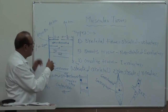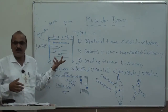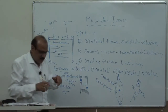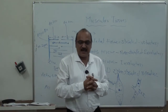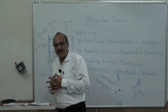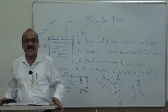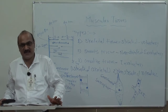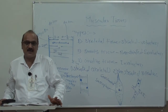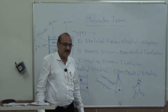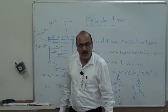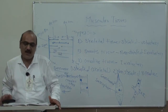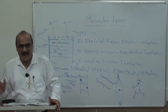These muscles play an important role, and the sarcomere is the unit of muscle contraction. In total, there are 639 muscles present in our body. Of those 639 muscles, 634 muscles are present in paired form, and only 5 muscles are unpaired.